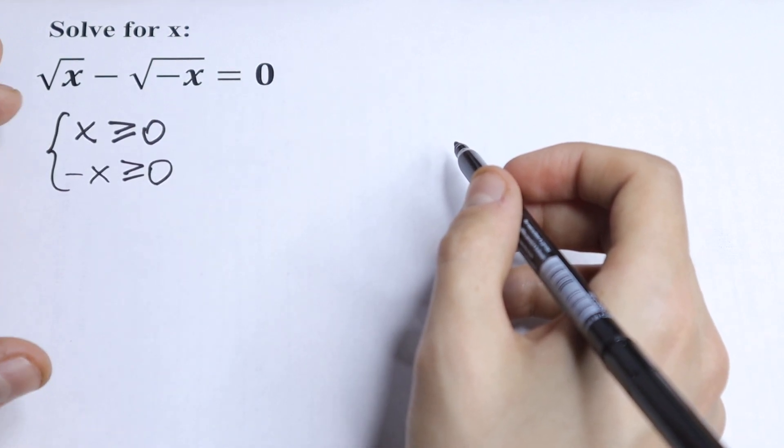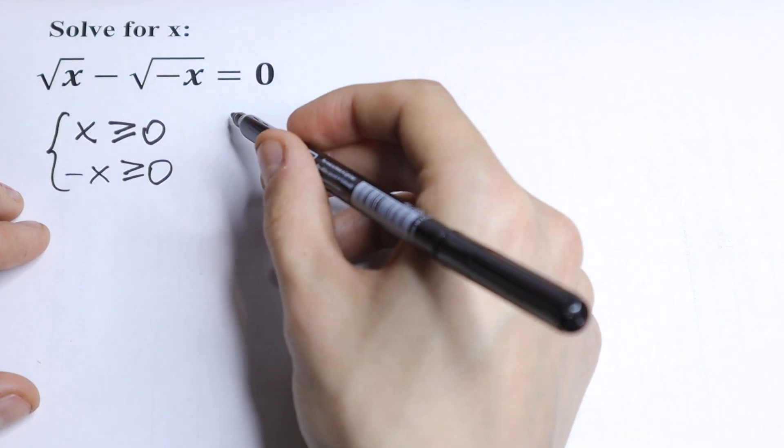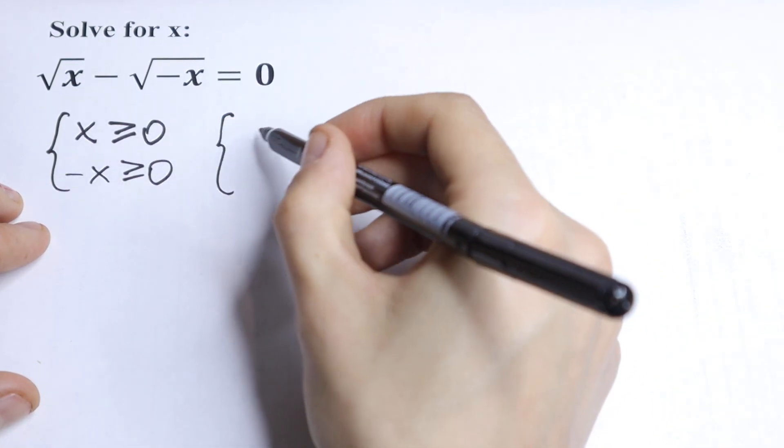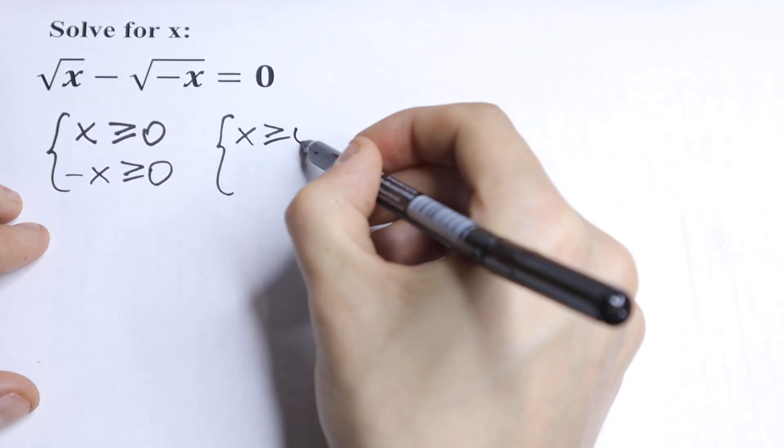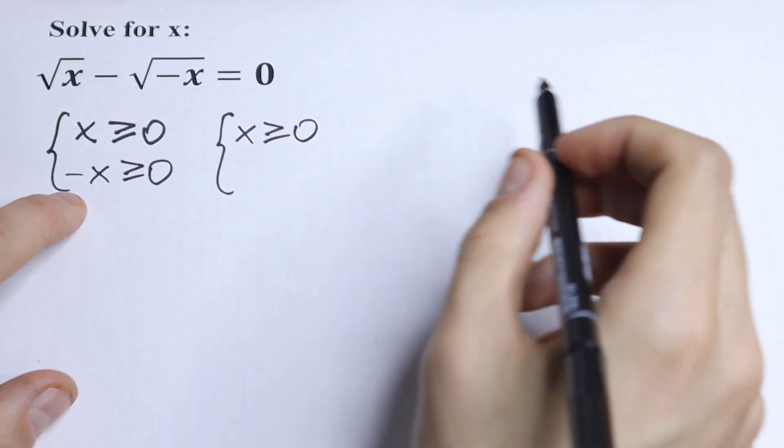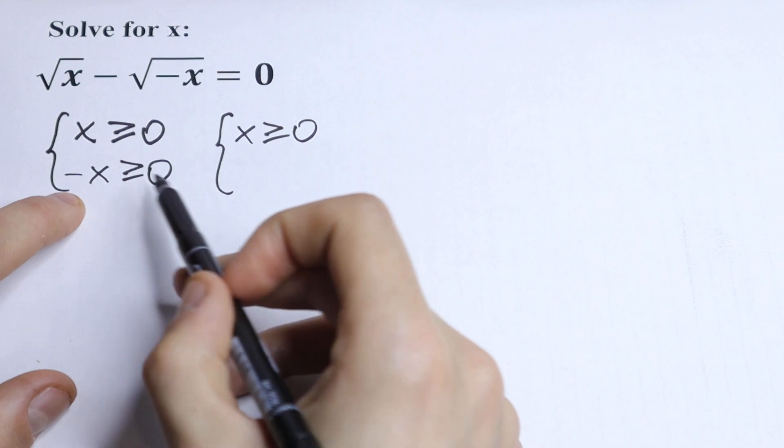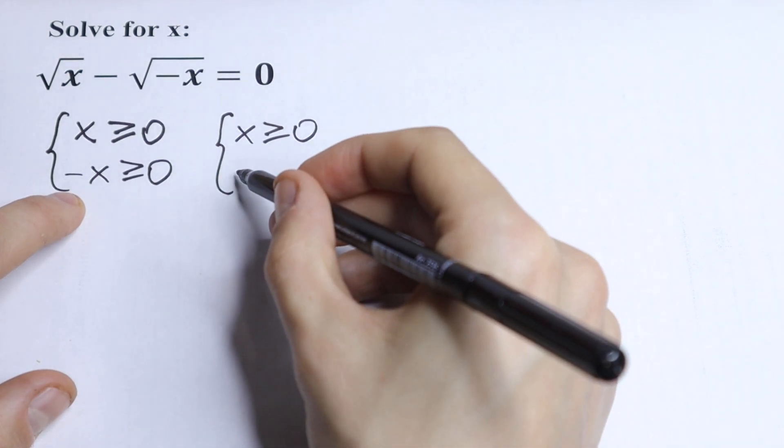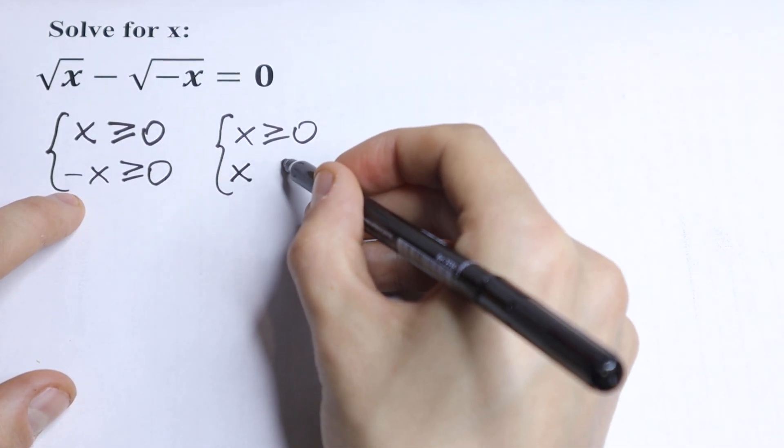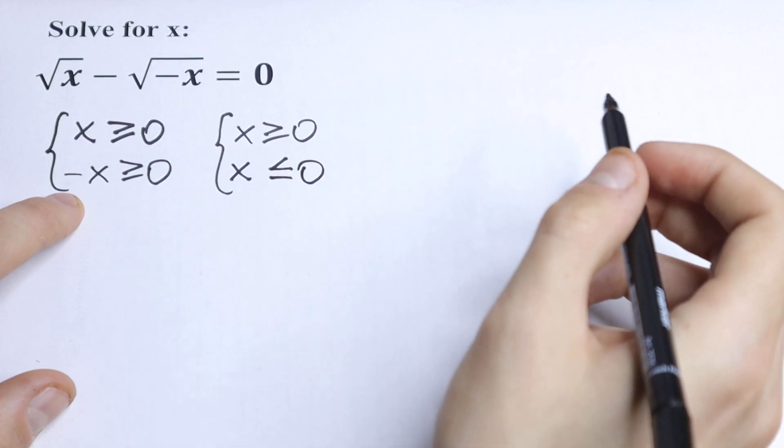OK, we have two inequalities. Of course we can solve this. First of all we can write this first x is greater than 0 or equal to 0. And this we multiply by minus 1 and of course we need to change our inequality sign. So we will have x is less than 0 or equal to 0.